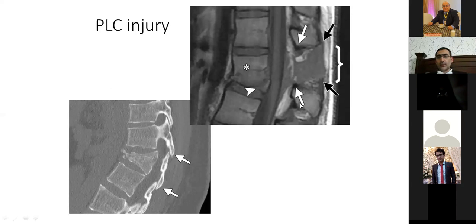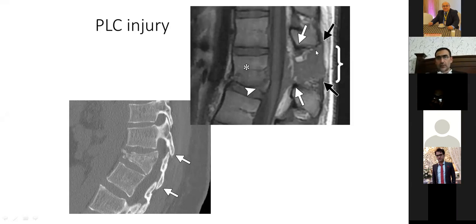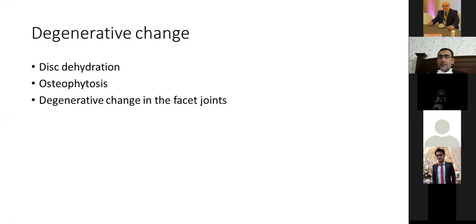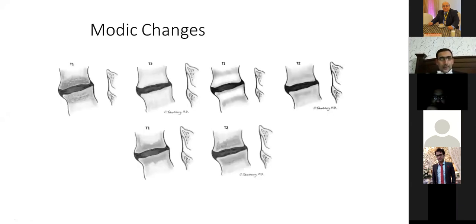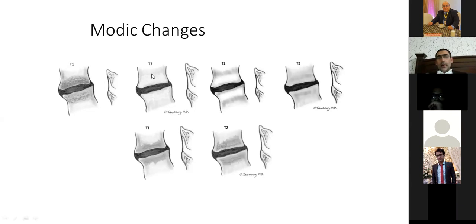On CT you can see extensive traumatic soft tissue injury through the spinous processes and interspinous spaces. The most common pathology is degenerative change: dehydration, osteophytosis, and facet degenerative changes. Modic changes are classified as Type 1, Type 2, and Type 3, and each has a characteristic appearance on T1 and T2 sequences.